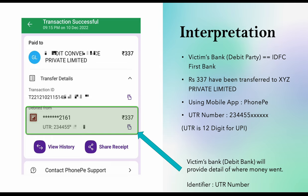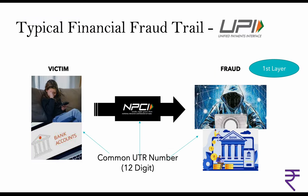The victim's bank — the debiting party — knows where the money went forward. To ask the victim's bank, the UTR number is mandatory. Based on the UTR number, you can track where the money went. Let's now see the trail.